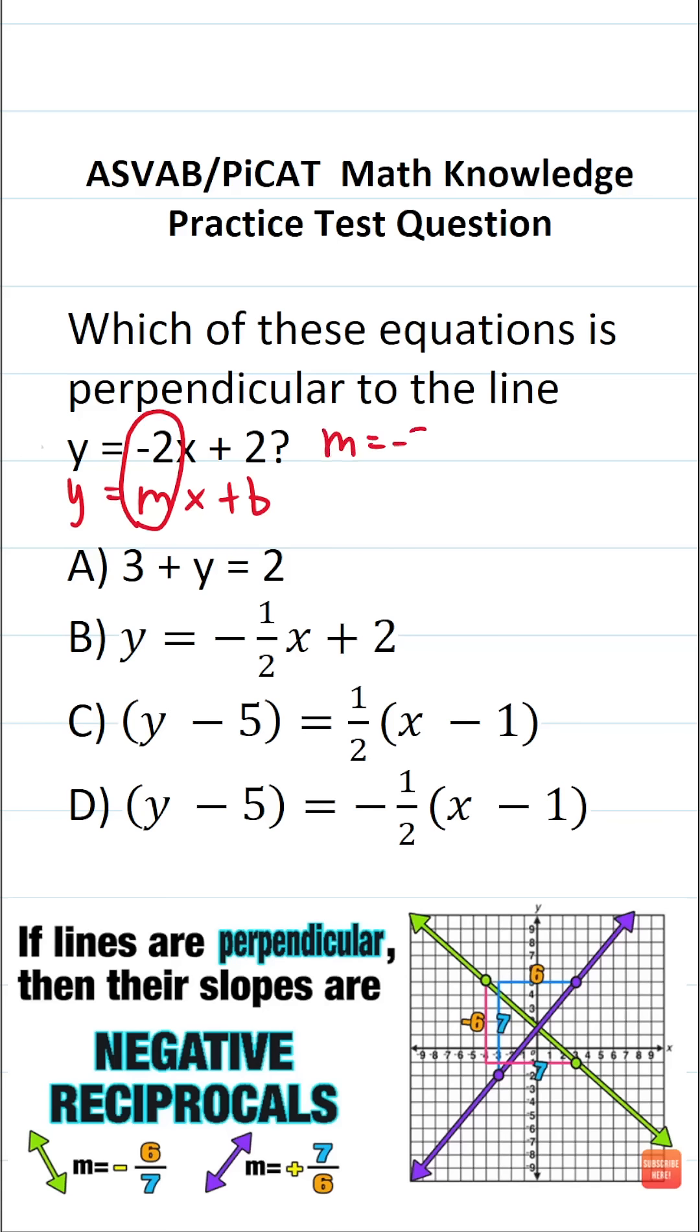So we can see that the slope of the equation that we're given is negative 2. Now, in addition to knowing that, you also have to know that perpendicular lines have slopes that are negative reciprocals.